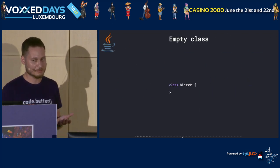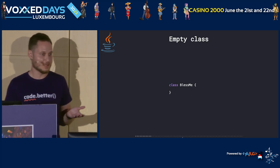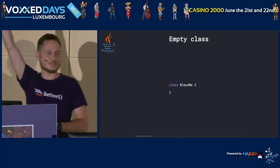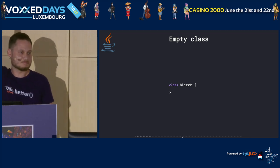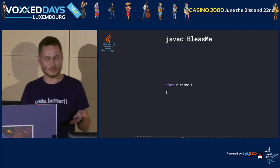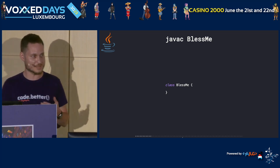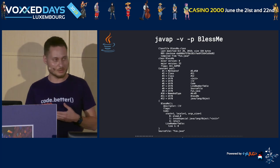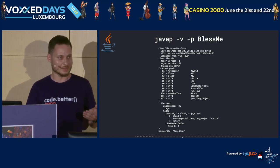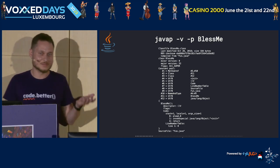Let's start with Java. Let's start with something simple: an empty class. Its name, just by chance, is 'BlessMe'. This class is empty — no methods, nothing inside. Let's compile it using javac, and look at what's inside the class file using another wonderful tool that comes with the JDK: javap, the so-called Java disassembler.